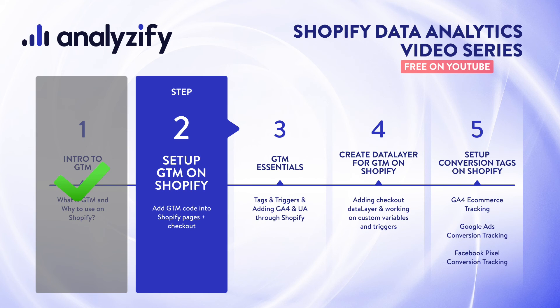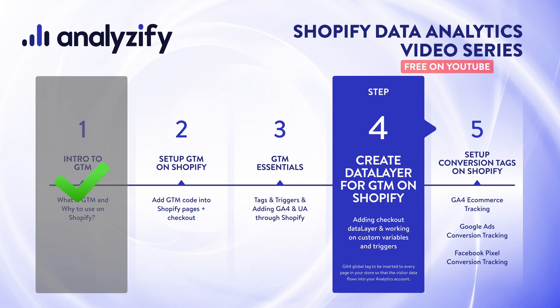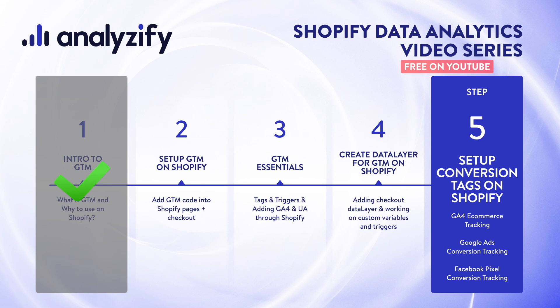In the next video we will set up GTM on our Shopify store and also in the checkout pages. As the next step we will visit Google Tag Manager essentials such as tags and triggers, and we will also add Google Analytics 4 and Universal Analytics code through Google Tag Manager. In the fourth and probably the most important video we will create data layer elements for our Shopify store, and then Google Tag Manager will be able to read them and process those information. Also we will be working on some custom variables and custom triggers through GTM. Later on in the last videos we will do the final actions by setting up conversion trackings and e-commerce trackings for our Shopify store.